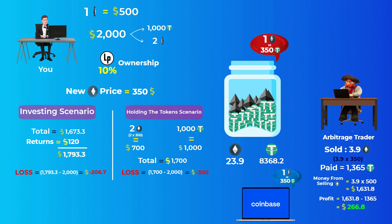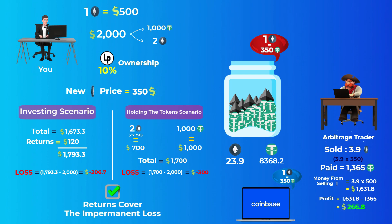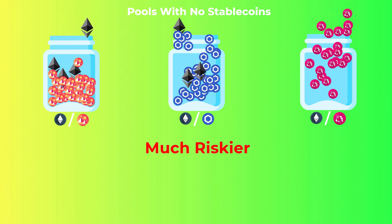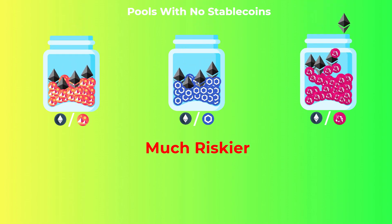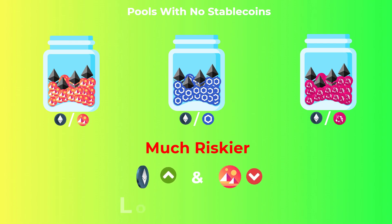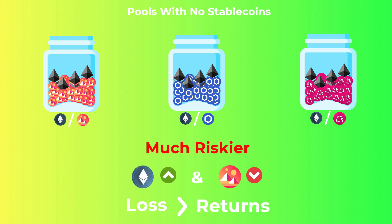As you can see, the fees can sometimes cover the impermanent loss, but that is not always the case. Pools with no stablecoins are much riskier than an Ethereum/Tether pool. In pools with no stablecoins, both tokens can move in price, and the impermanent loss in this case could easily exceed the returns earned from the pool.